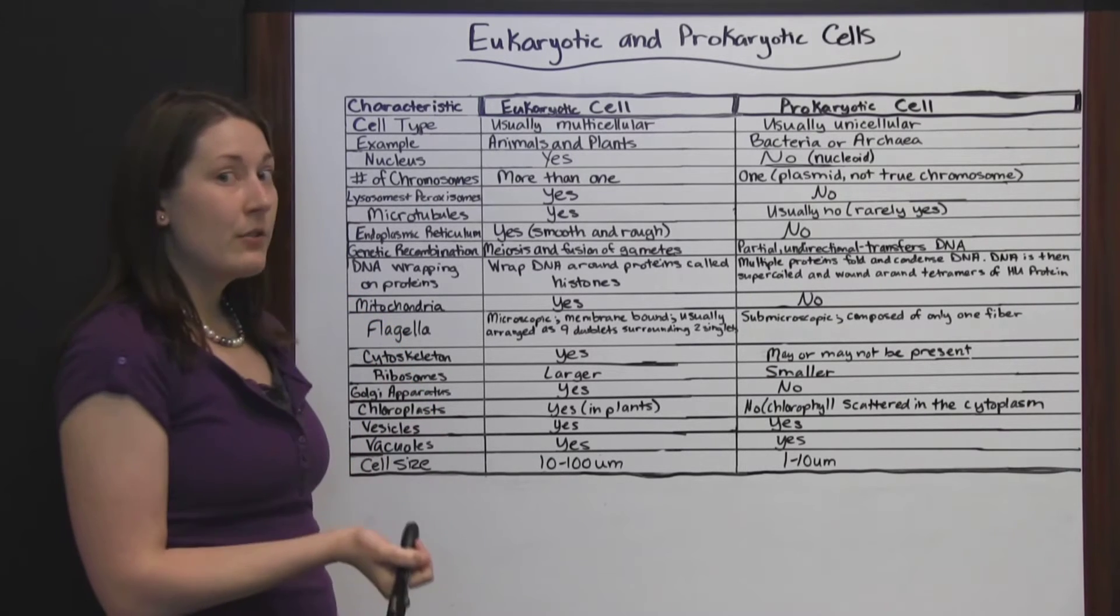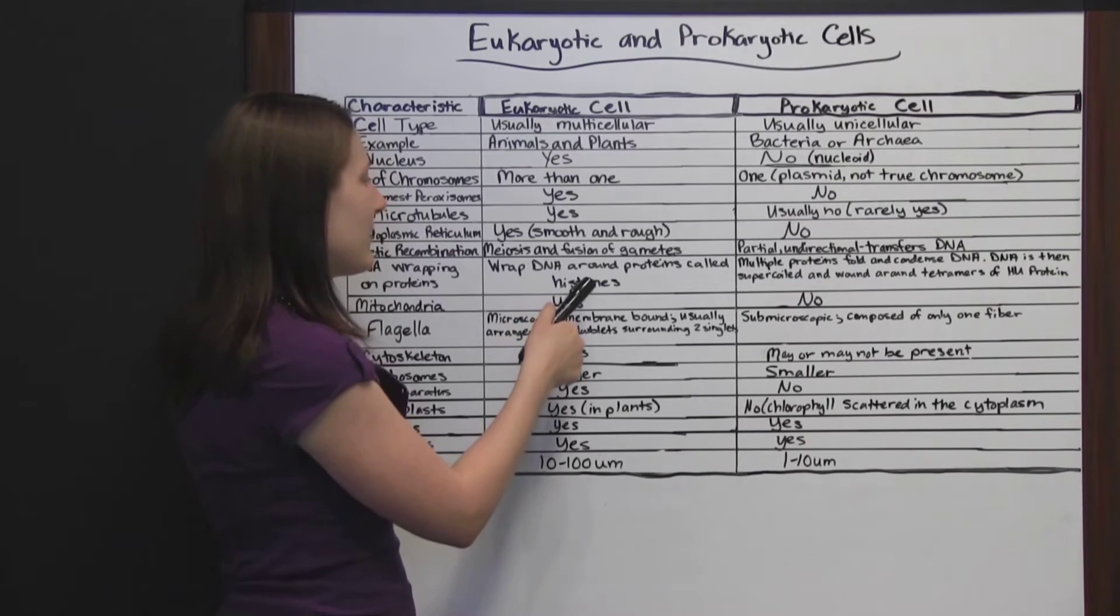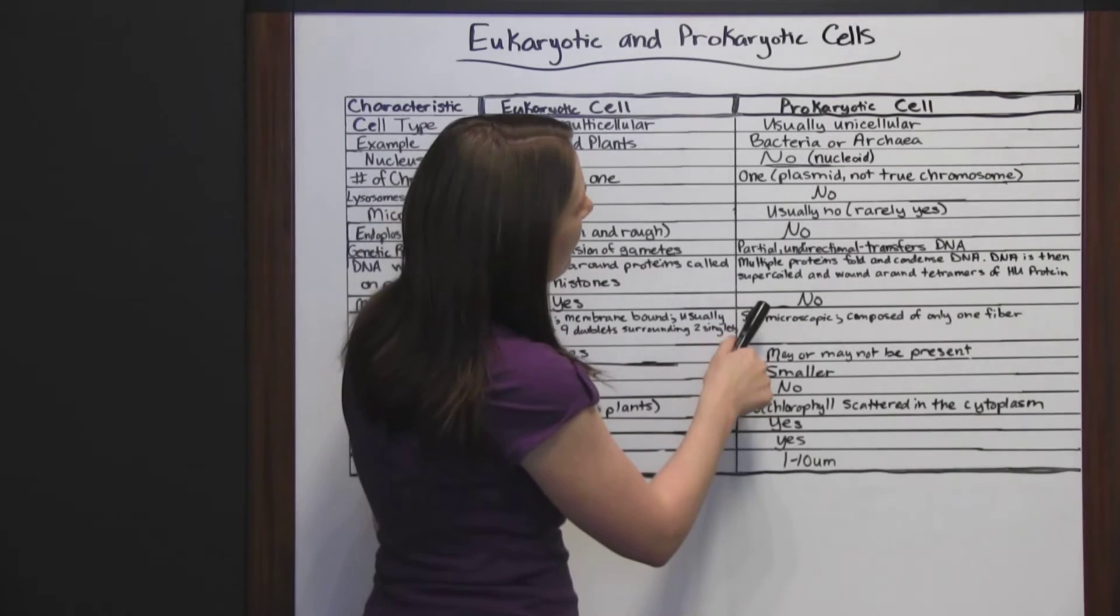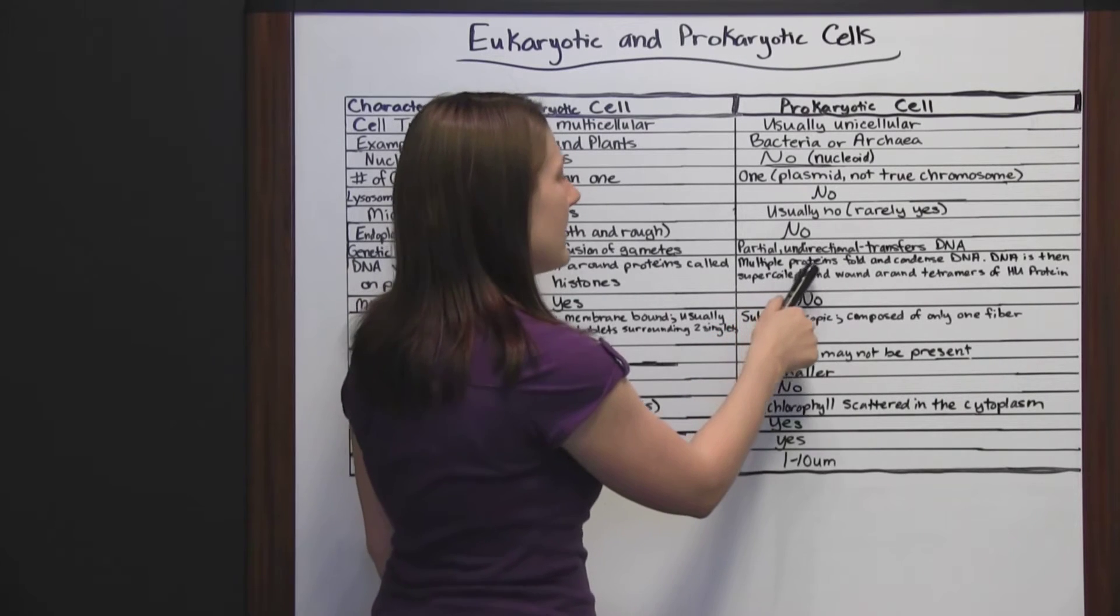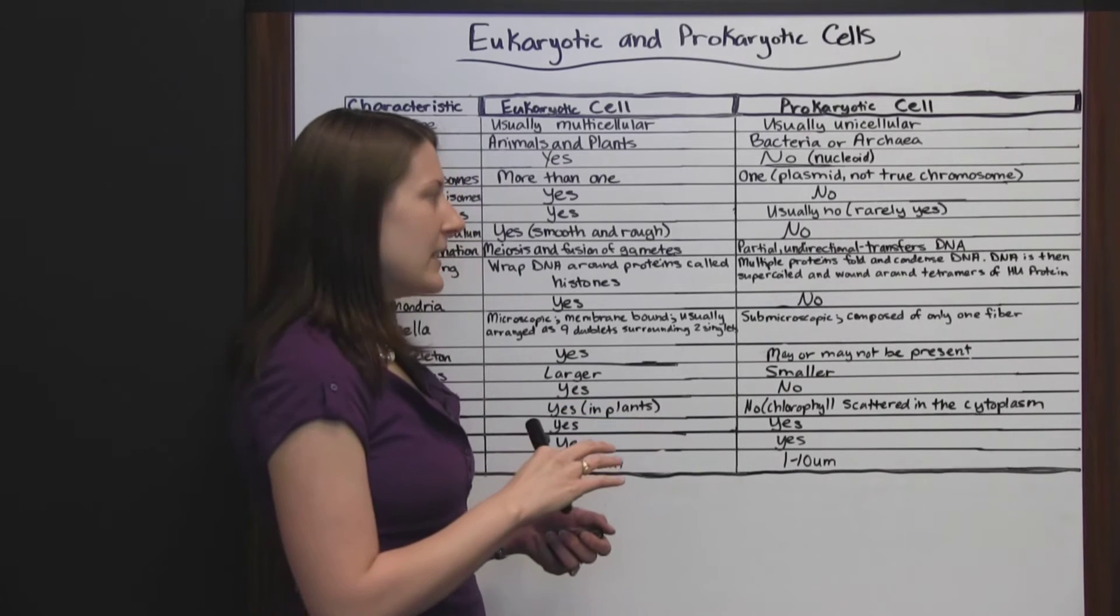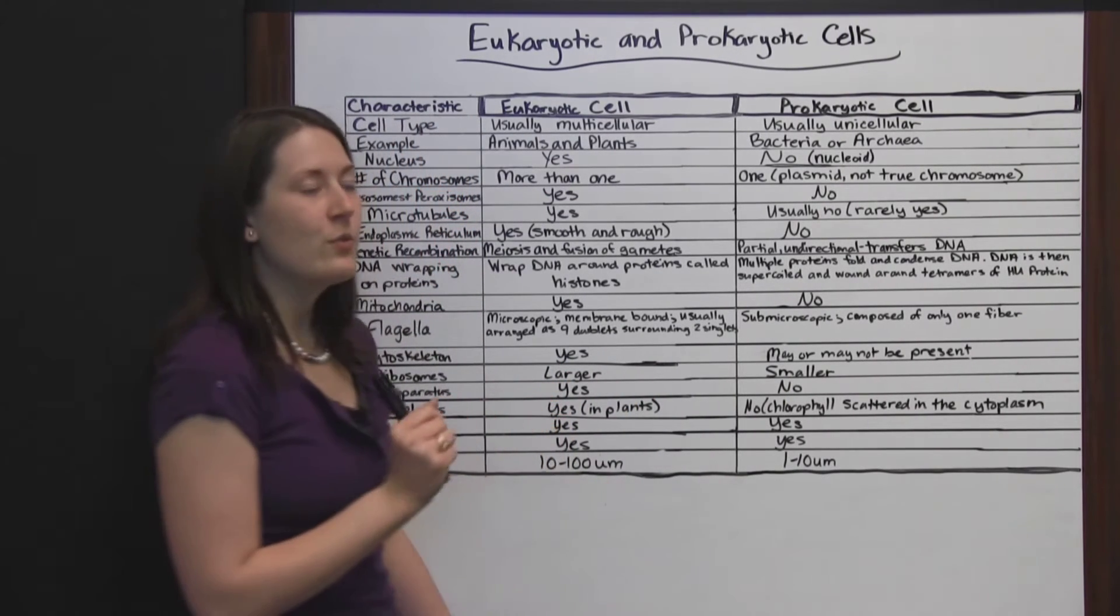DNA wrapping on proteins. In eukaryotic cells, the DNA wraps around proteins called histones. In prokaryotic cells, there are multiple proteins that fold and condense the DNA. Once it's folded and condensed, it's supercoiled and wound around tetramers of HU protein.